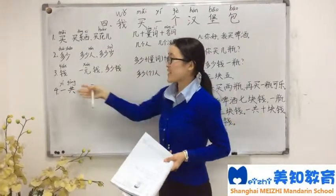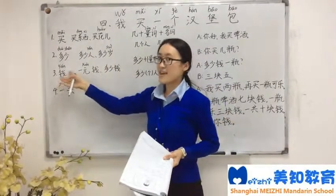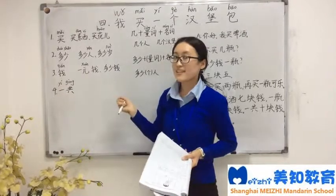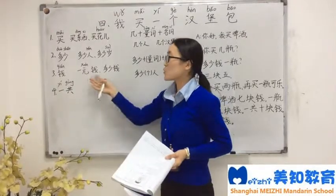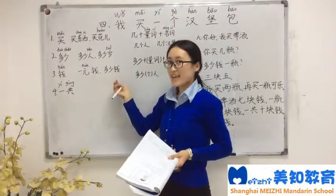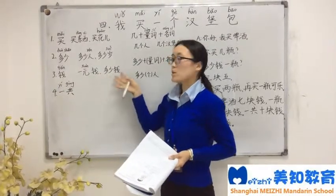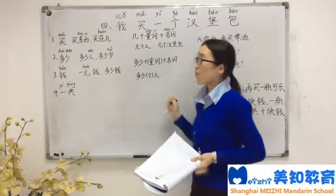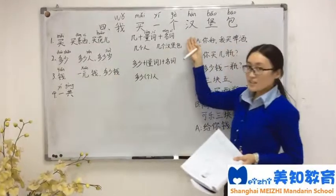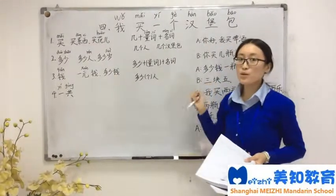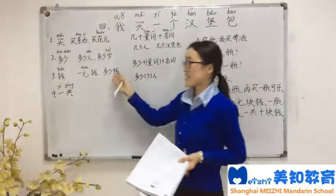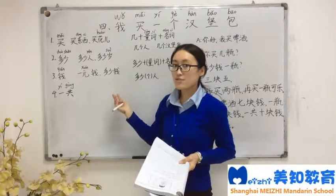Next: 钱, which means 'money'. For example, 一元钱 means 'one yuan'. 多少钱 means 'how much money'. For example, 这个汉堡包多少钱 — how much is this hamburger?